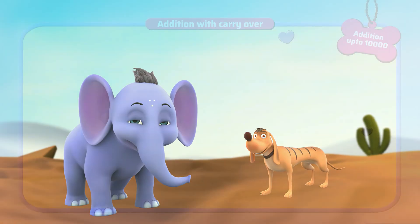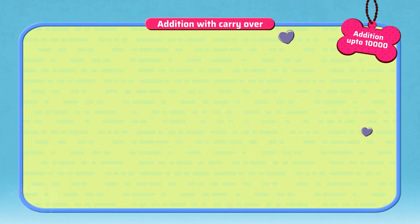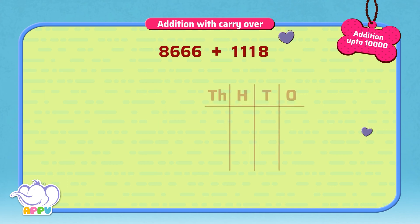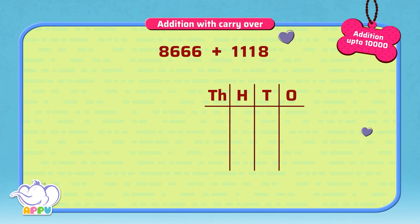Let's try it out. 8,666 plus 1,118. We write it as thousands, hundreds, tens, and ones.